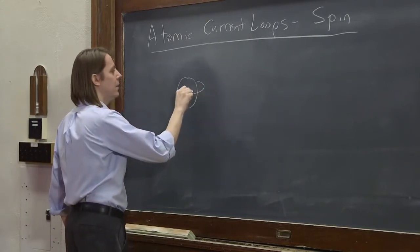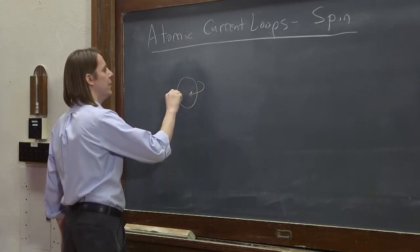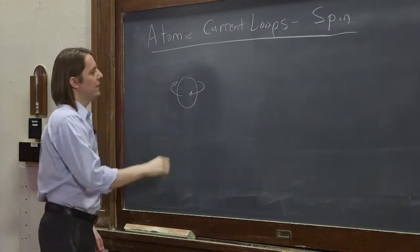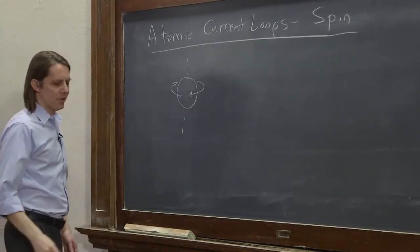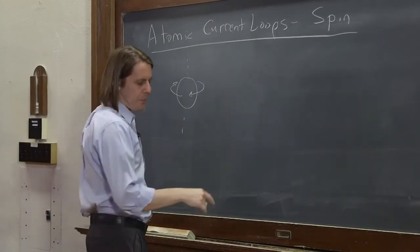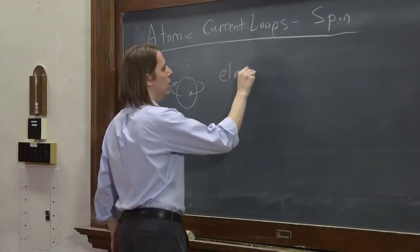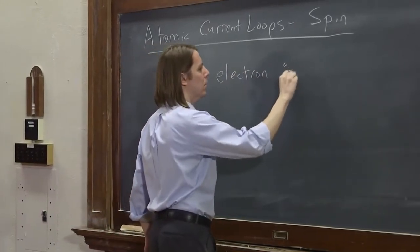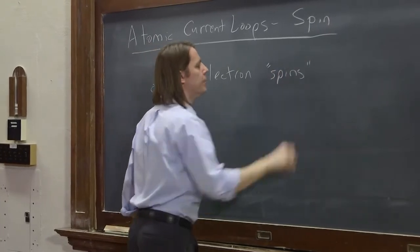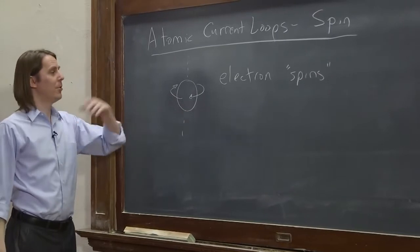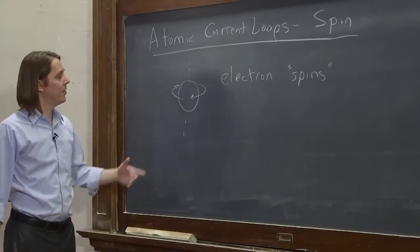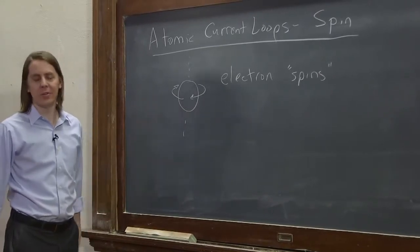You can imagine that it's spinning around and that it's on some axis, say, like that. The electron is spinning around, and it's made up of charge. So you have a volume density of charge spinning around. Therefore, that's going to be a current, and that current is going to have a magnetic moment.